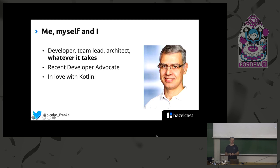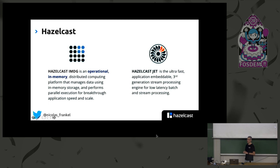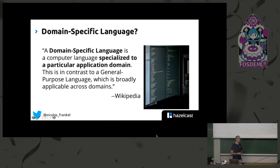I'm now working as a developer advocate for Hazelcast. I've been a long-time Kotlin fan. If you're in the Java ecosystem, Hazelcast is basically a distributed data structure — to make it very simple. Then we have another product called Jet, which builds upon it and does stream processing using Hazelcast IMDG — in-memory — which needs to be very, very fast.